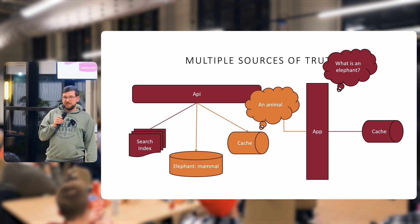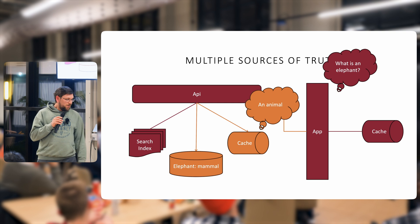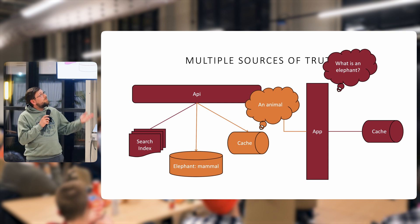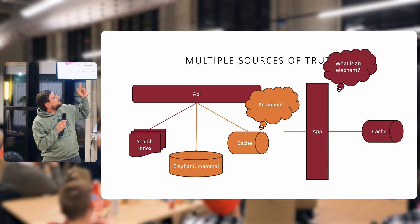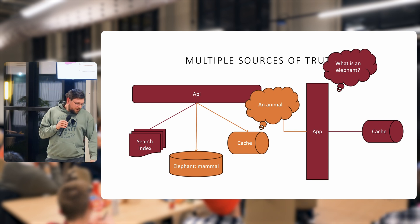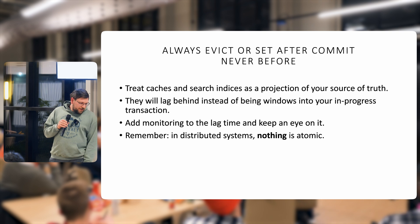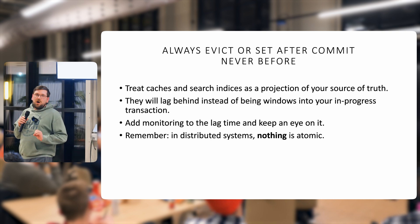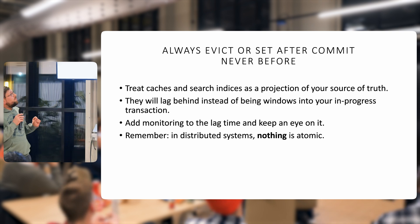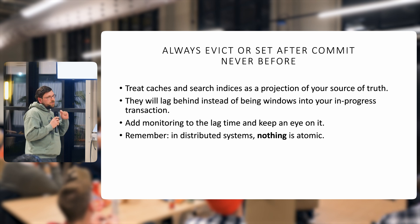However, in our transaction that just committed, we have wrote mammal. So now we have inconsistencies. Our cache says it's an animal. An elephant, or our database says it's a mammal. So basically, we always want to make sure that we evict or set after we've committed.